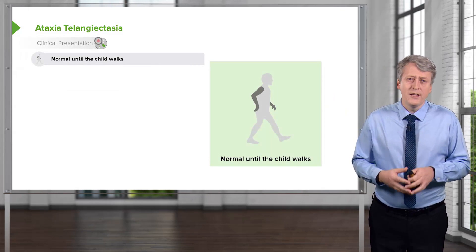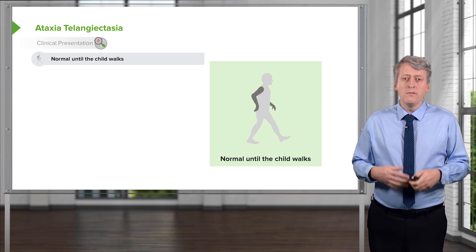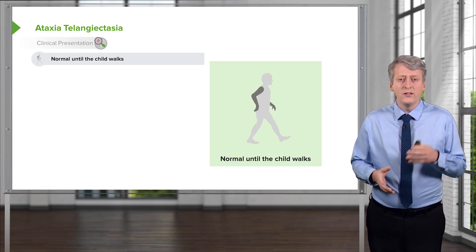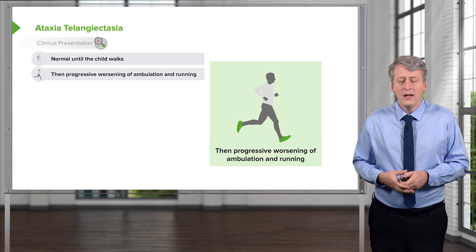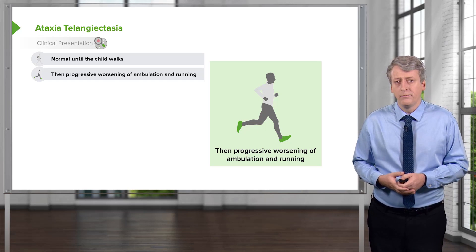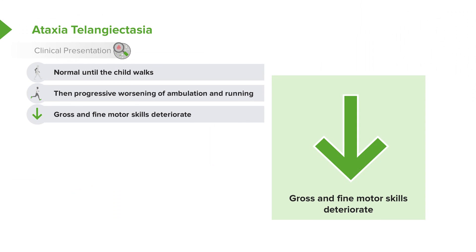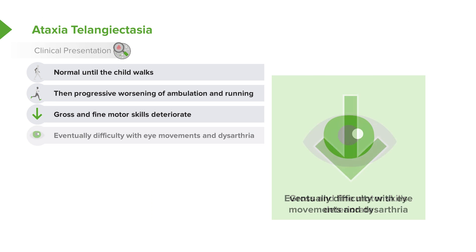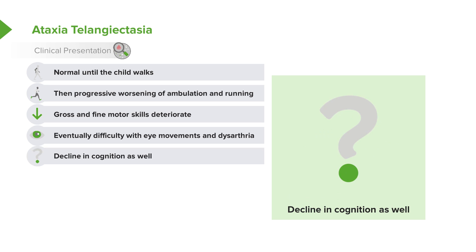Children with ataxia telangiectasia are generally born normal and continue to develop normally until about the age when the child walks. The child often then has a progressive worsening of ambulation and running, with gross and fine motor skills that deteriorate over time. The child will eventually develop difficulty with eye movements and dysarthria. The eye movement difficulty involves coordinating the movement of the head and the eyes, so when they turn their head, they have trouble keeping track of objects in their environment.